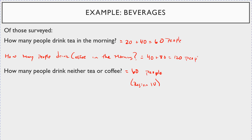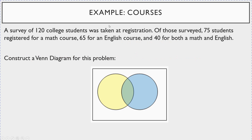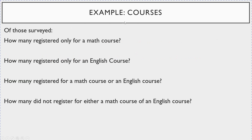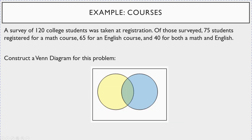Pay close attention to the wording of problems — the next example is slightly different and a little harder. The subtle difference in phrasing will change how you fill in the Venn diagram, so listen carefully to the wording.